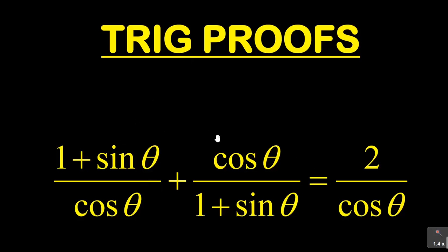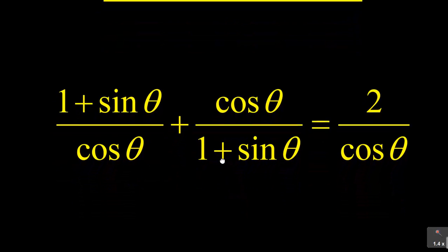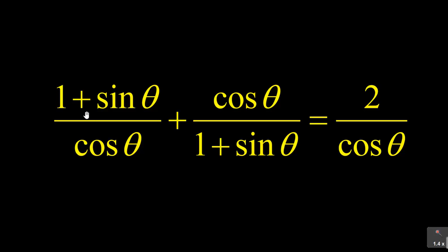This is a trig proof from one of the papers that was previously written. It says you must prove that (1 + sin θ)/cos θ + cos θ/(1 + sin θ) = 2/cos θ. Remember, whenever you're doing your proof, you have to choose which side you want to prove so that it can become the other side.